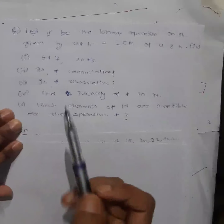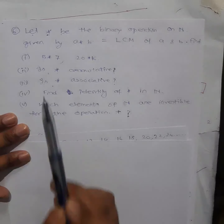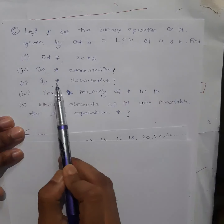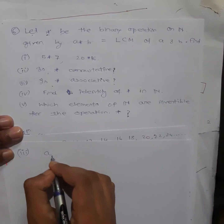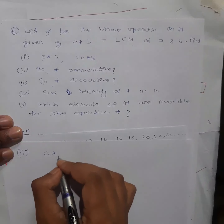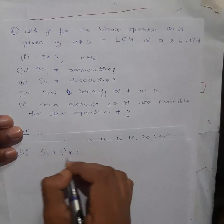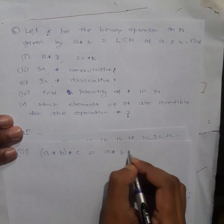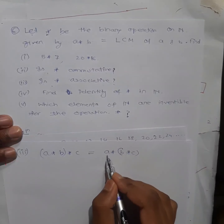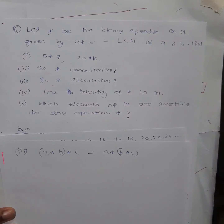Question number 3: is ★ associative? You need to prove that for three elements, if I do the operation like (A★B)★C — first between A and B, then with C — it must be equal to A★(B★C) — first between B and C, then with A. If both outcomes are the same, then the operation is associative.